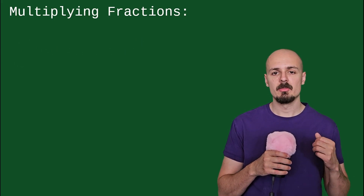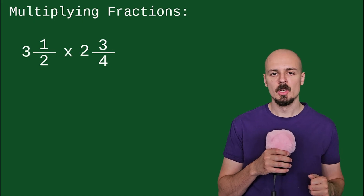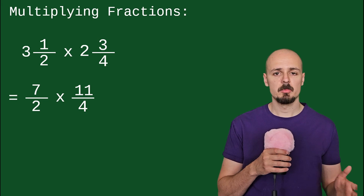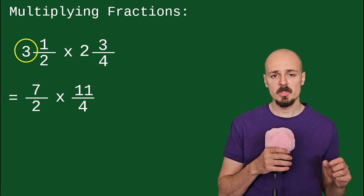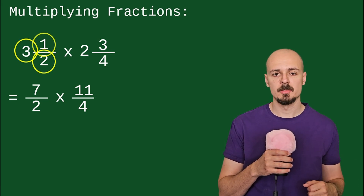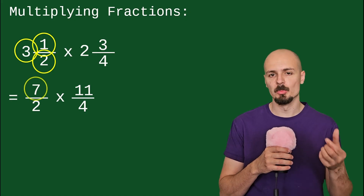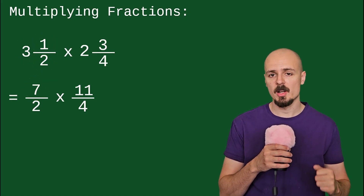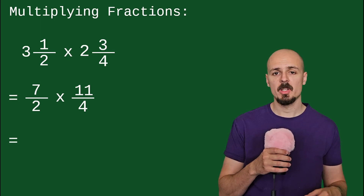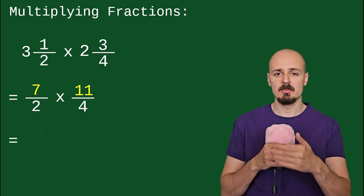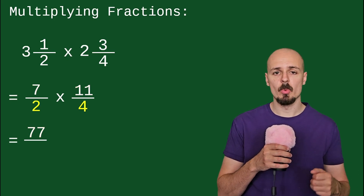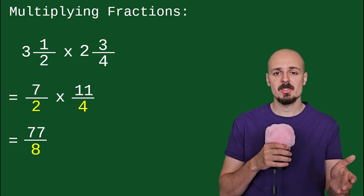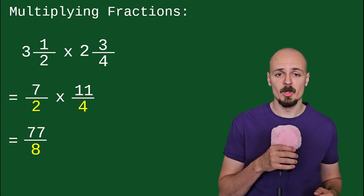If you have mixed numbers, I recommend first changing them to improper fractions. All you're doing is the whole number times the denominator plus the numerator — that gives you the new numerator. Follow the same process for the other fraction. Now multiply: 7 times 11 is 77, and 2 times 4 is 8. You're done — unless you want to change this into a mixed number, but I'll let you do that on your own.